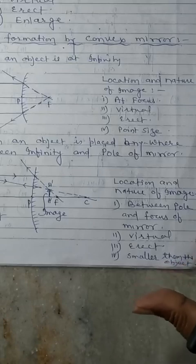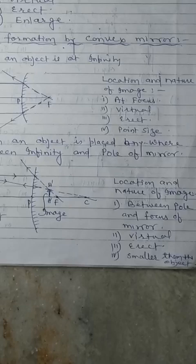So there are only two positions to obtain image formation by convex mirror in this chapter.